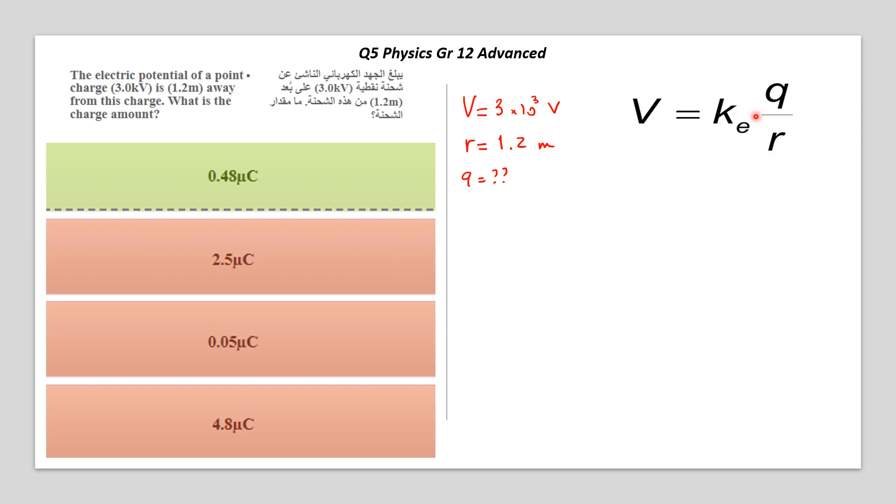A little arrangement here. The unknown is Q. The voltage is given and the distance r is given, so you need to arrange the equation. Now Q is equal to r multiplied by V over K. So you replace the figures.